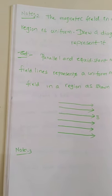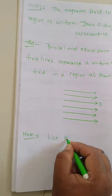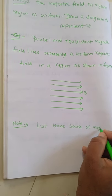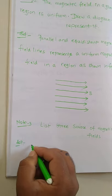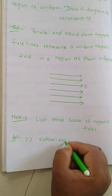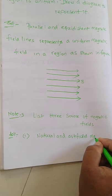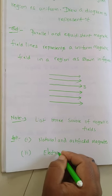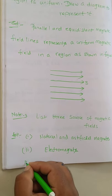Last note point: list three sources of magnetic fields. First point: natural and artificial magnets are sources of magnetic fields. Second: electromagnets - actually this was deleted by CBSE so it is not in our syllabus, but it is also one of the sources of magnetic fields.